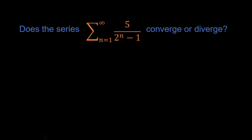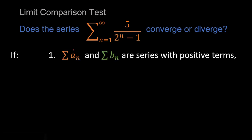Back to our original question. To apply the limit comparison test we need two series: one is the series we start with, the sum of a sub n — I'm using lazy mathematician notation here, but it's still valid — and now we use a series that's somewhat similar, the summation of b sub n. Our first criteria is both series must have positive terms: a sub n greater than 0 and b sub n greater than 0 for all n we're concerned about.